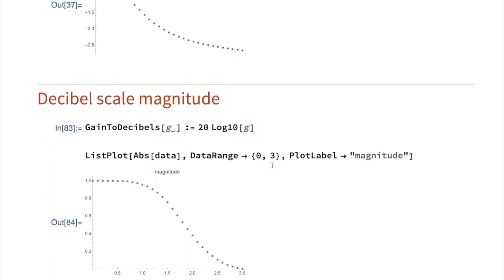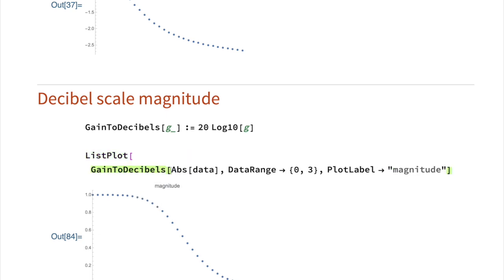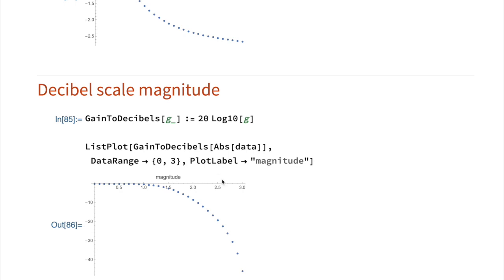The last thing that you might need is decibel scale magnitude. So here's a formula for converting the voltage scale or linear scale gain to decibels: 20 times the log in base 10 of the gain. So right now this is a linear scale plot, but if I want it to be decibel scale, I can just call gain to decibels, and you will see I'll get decibel scale.